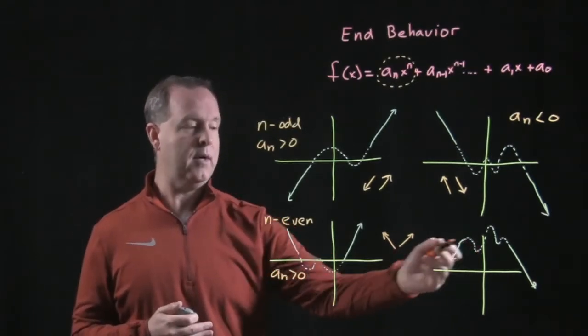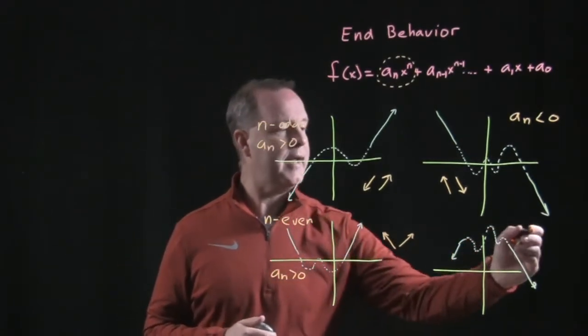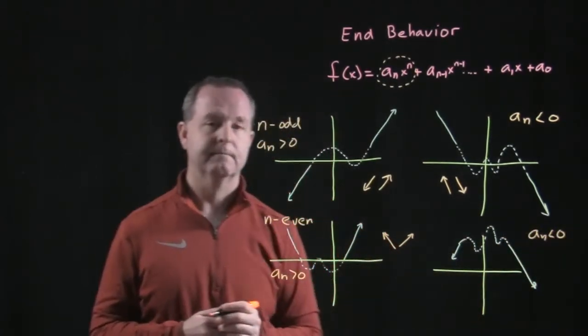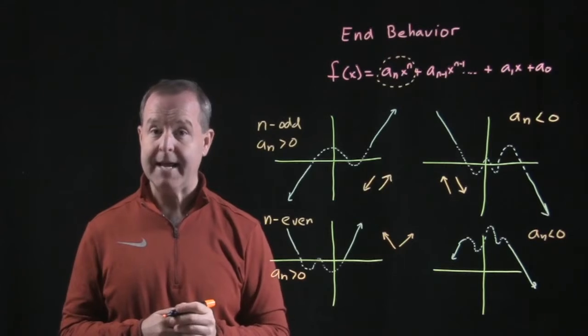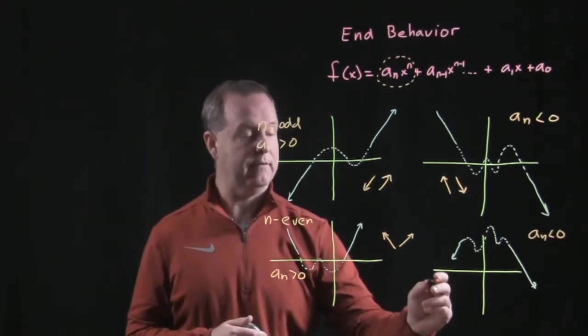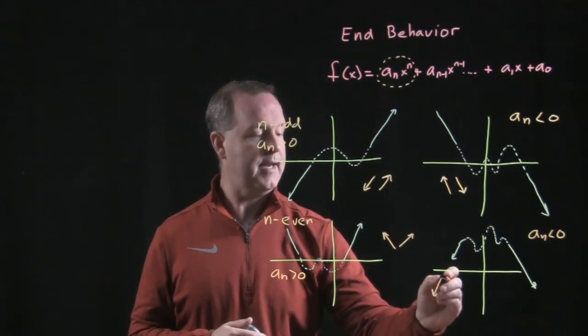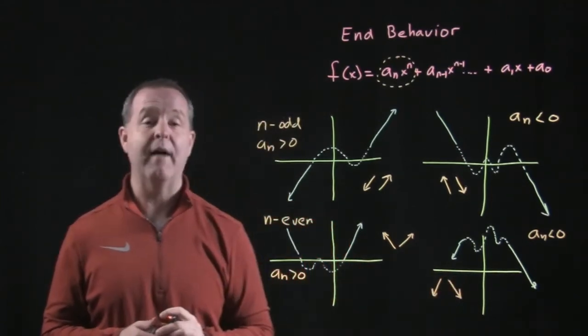And then lastly, this last one is an example where I have my leading coefficient is negative. And so what is its end behavior doing? Well, it starts off with low values and it ends up with low values.